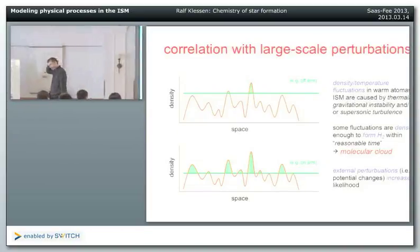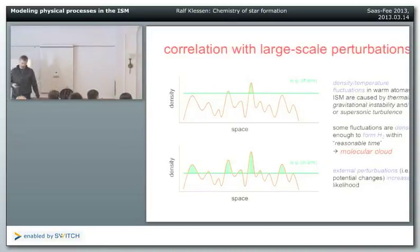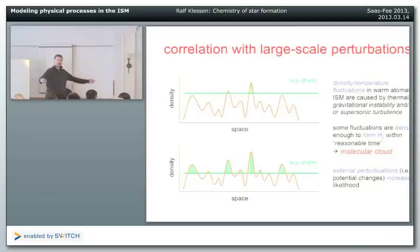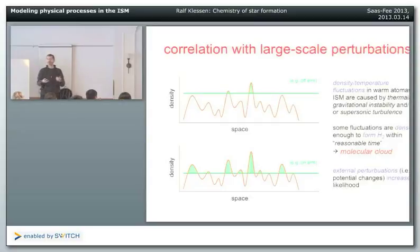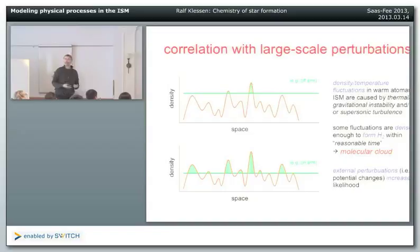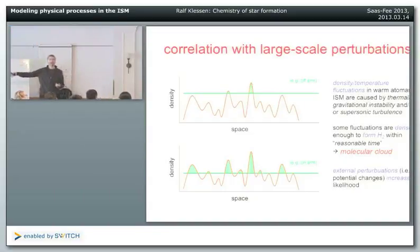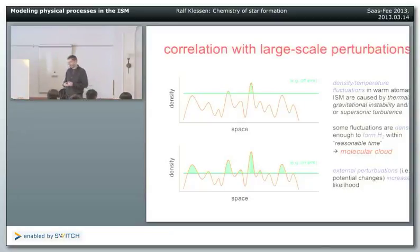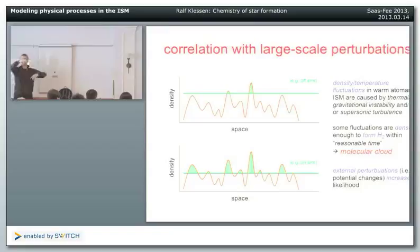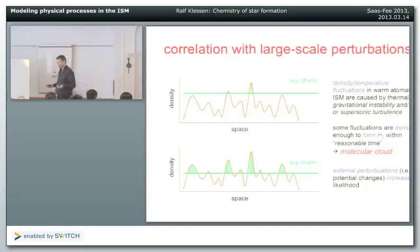Cooling is typically proportional to density squared, because by collision you have to bring two particles together to excite internal degrees of freedom, which then have a chance to de-excite radiatively. If you're in an optically thin regime, the photon carries away kinetic energy. Cooling rates depend on the density distribution, and we can ask what type of density fluctuations we have in the interstellar medium. There are quite a number of different agents that can drive turbulence and give rise to density fluctuations.